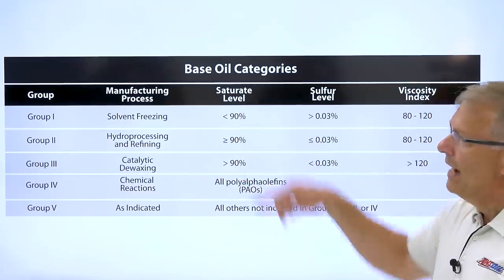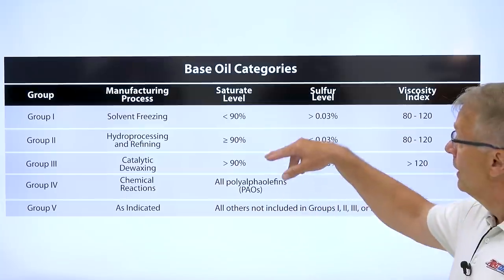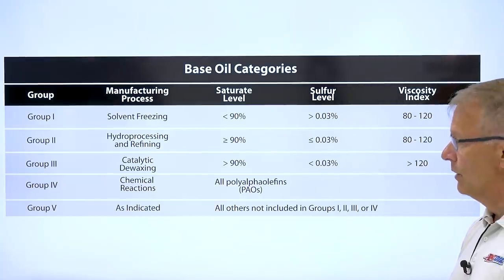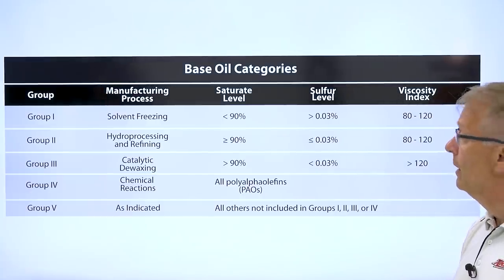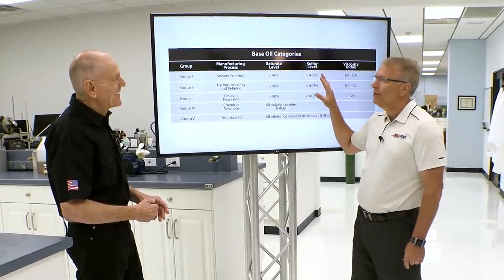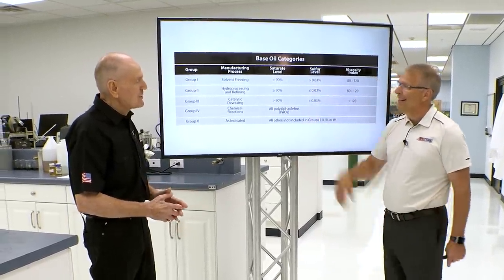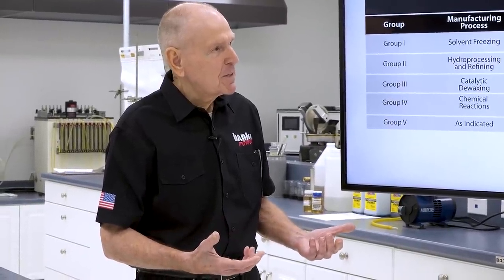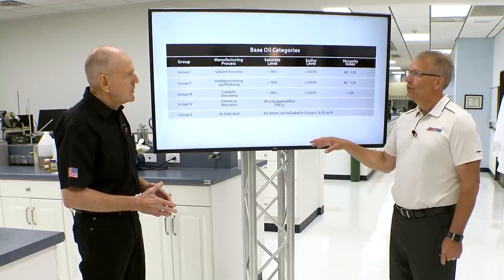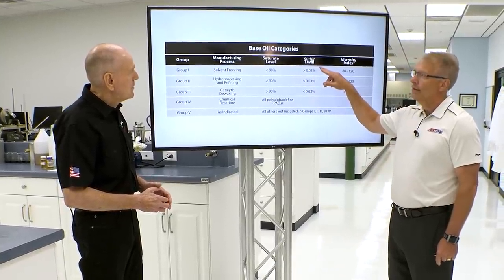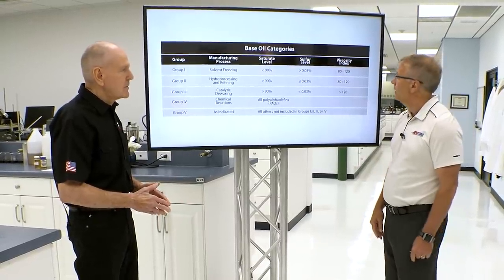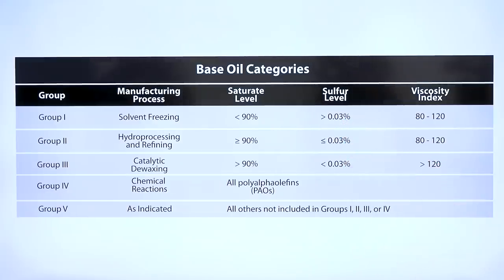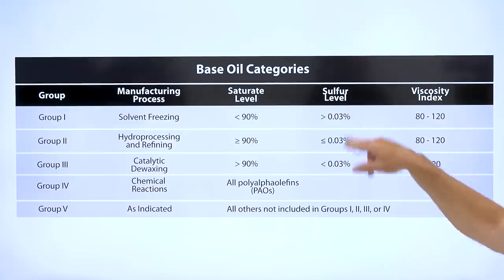The saturate level has a lot to do with oxidation resistance — either a lower amount of saturation, which is not good, or a very high amount. Sulfur is a typical contaminant that comes out of the ground. You can get sweet crude or sour crude — you're smelling the hydrogen sulfide, the sulfur content. That does carry through, so there's an amount of sulfur we don't want in the base oil. Group I has a fair amount of sulfur in it, so we work to get more sulfur out.